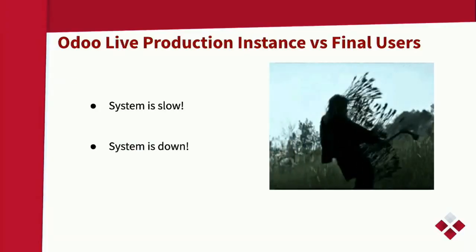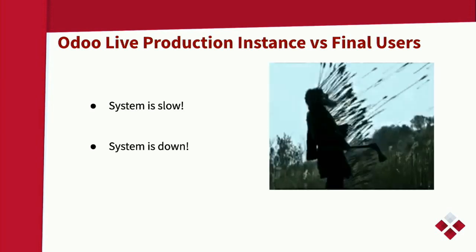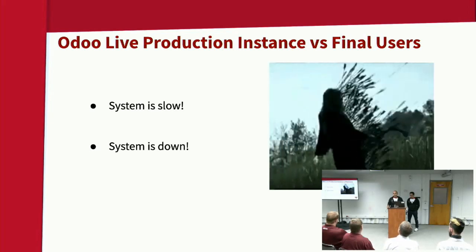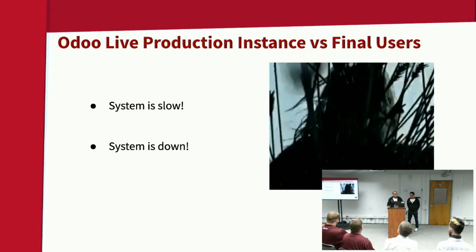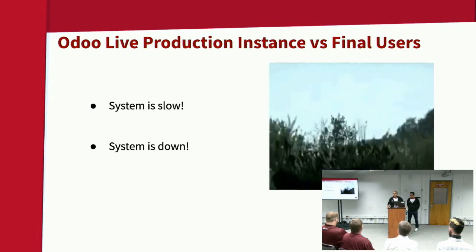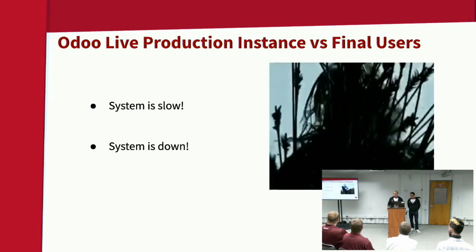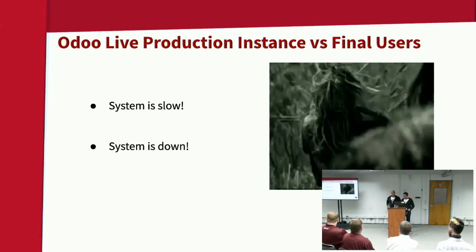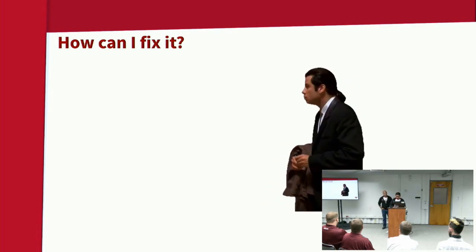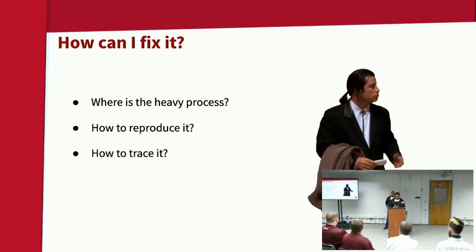So, what happens? There's a user who calls, who places a ticket, and they're mad, they're angry. The system is down, the system is slow, they cannot invoice, they cannot deliver, whatever. And the thing is it's only happening on the production instance. That's when things get ugly, when you cannot reproduce. The first questions are: how can I fix it? Where is the heavy process? How to reproduce? How to trace it?